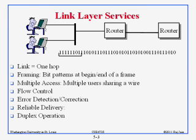Then we will talk about multiple access — how do we allow multiple people to be on one link. Then we talk about flow control. We already talked about flow control end-to-end, but now we have a sender and receiver on every link, so we need flow control and error control all over again.